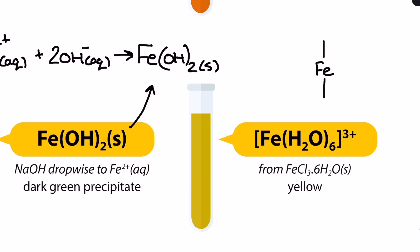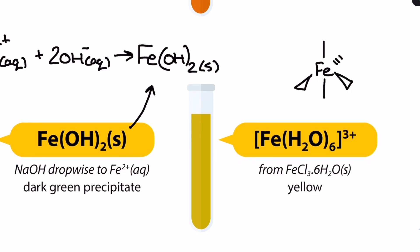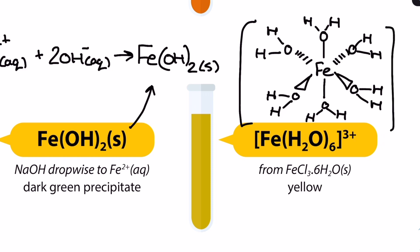Moving on to the iron III ion, we can see another hexa aqua complex ion for this yellow solution but this time I'm showing the waters a little differently to demonstrate another way we can represent them. Otherwise it's largely the same with the obvious change in the charge.